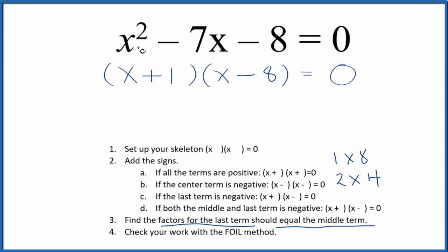And we factored the equation x squared minus 7x minus 8. Let's check our work though with the FOIL method.